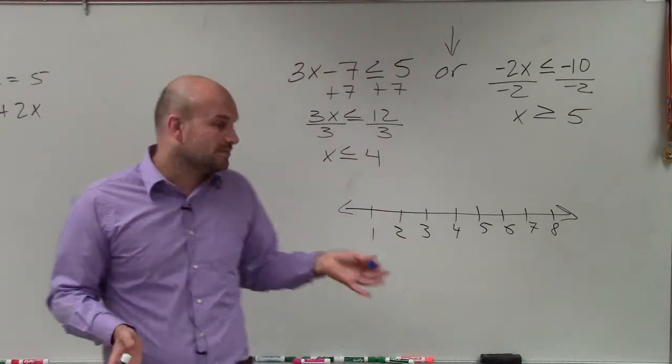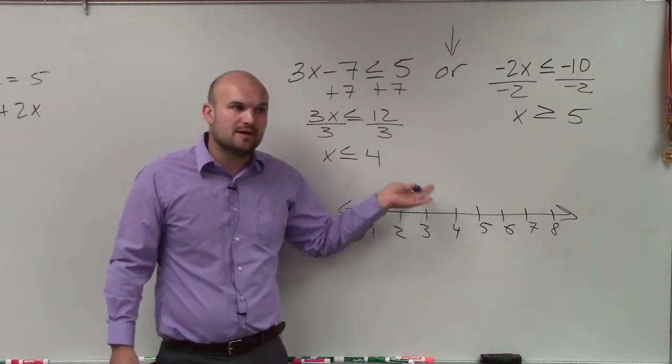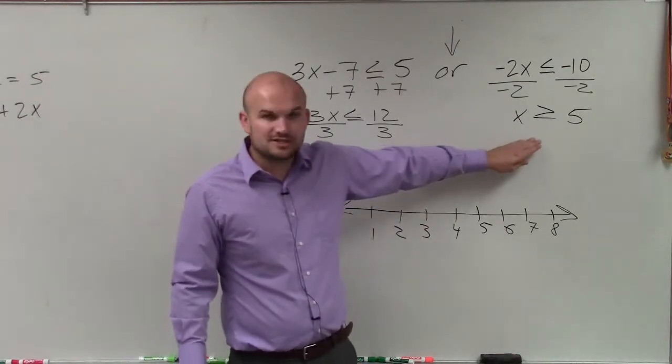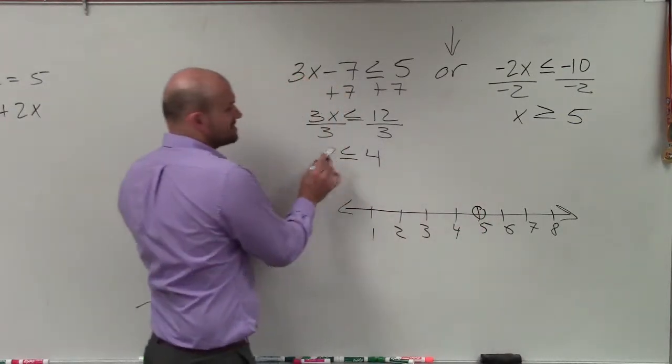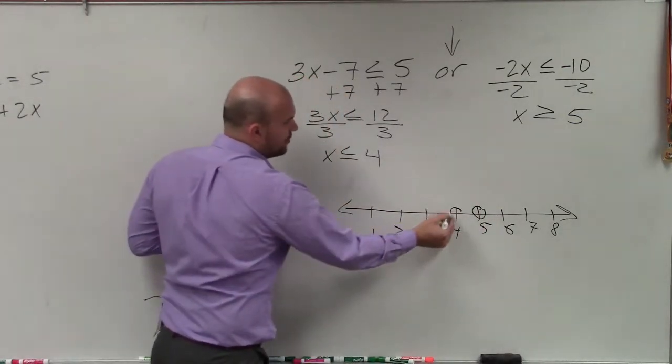So now all I'm simply going to do is graph both of these on the same number line. So when graphing x is greater or equal to 5, again, you make a point at 5. And x is less than or equal to 4, you make a point at 4.